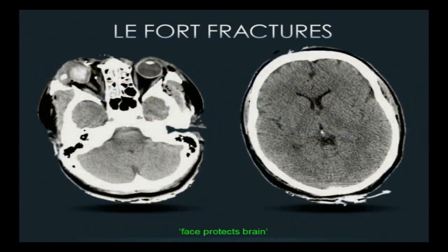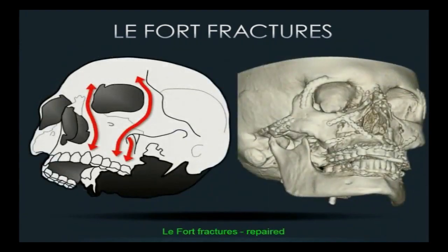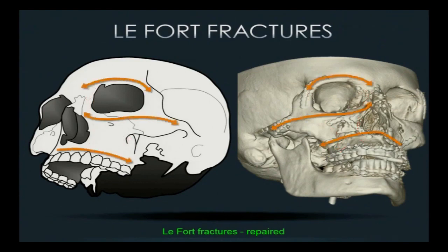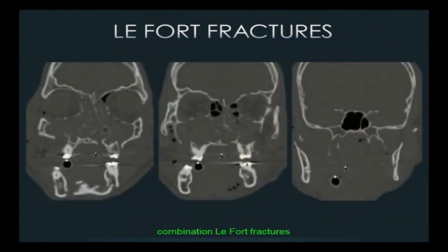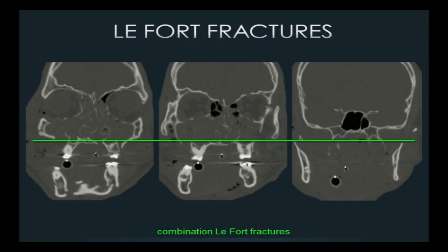The face protects the brain like the crumple zone of your car — in one patient we see tremendous facial injuries and globe injury, but the brain was pristine. When surgeons repair these, hardware is placed along the lines of the buttresses. LeFort fractures don't have to be symmetric — you may have bilateral LeFort 1s and 2s, but only a left-sided LeFort III, which we'd report as bilateral 1s, 2s, and a left hemi-LeFort 3.